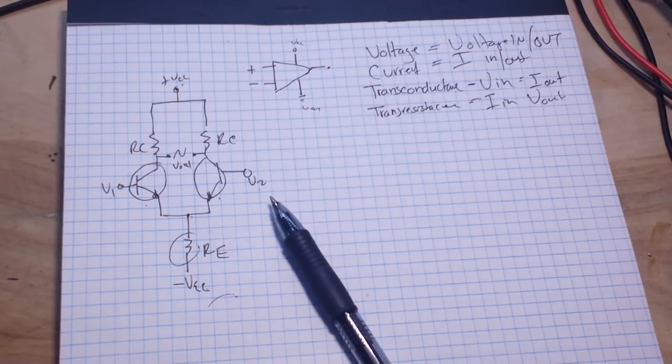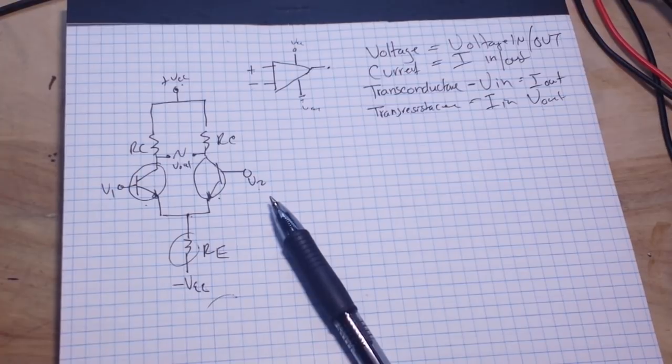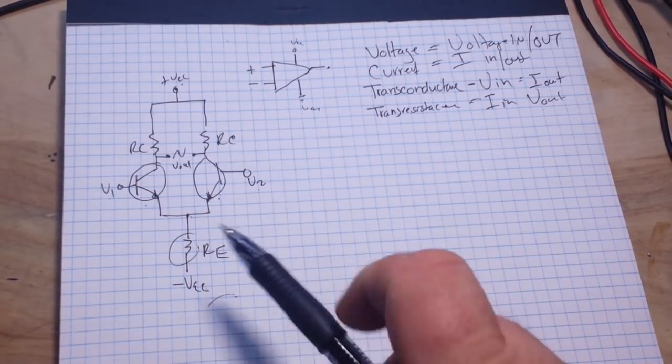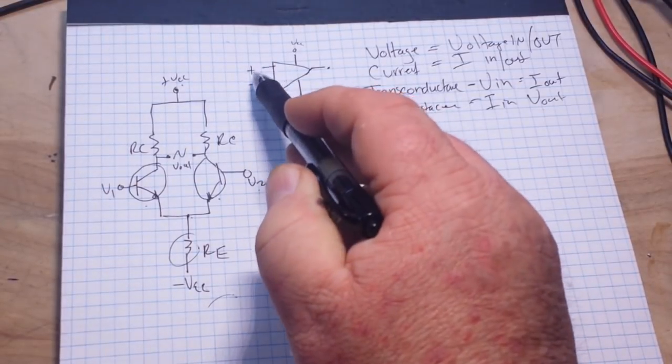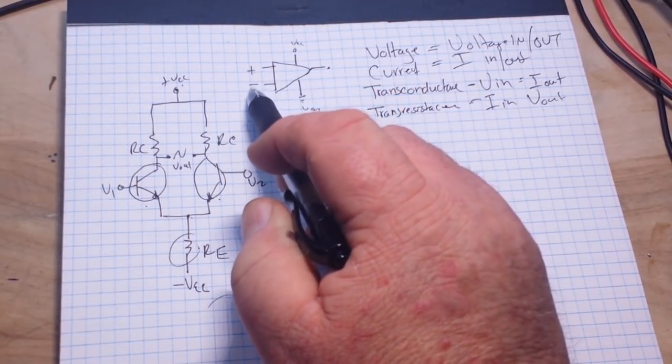Also the current coming into our collectors will be differential as well. As one goes up, one will go down, and everything stays balanced. And that's a basic differential amplifier using an op amp. But this is what the circle would look like with resistors and transistors.